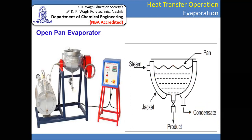Normally the jacket is constructed of mild steel, stainless steel, copper, or aluminum as per the process requirement. If the open pan evaporator is used in the food industry or pharmaceutical industry, stainless steel is the preferred material of construction.